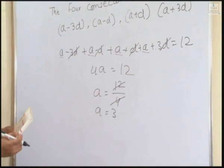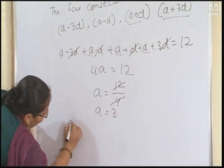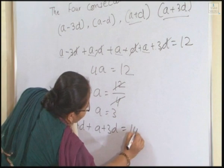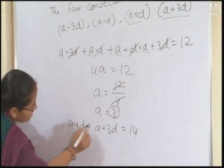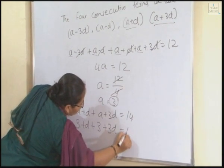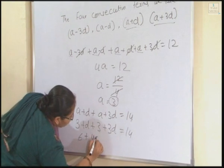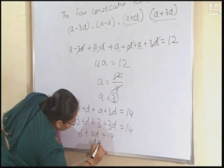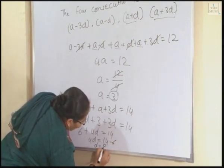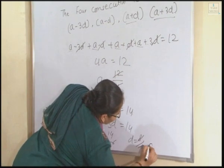The other equation is given: the sum of 3rd and 4th term is 40. The 3rd term is A plus D and the 4th term is A plus 3D, equal to 40. Now we'll substitute the A value. 3 plus D plus 3 plus 3D equals 40. So 3 plus 3 is 6, 6 plus 4D equals 40. 4D equals 40 minus 6, so D equals 34 divided by 4.